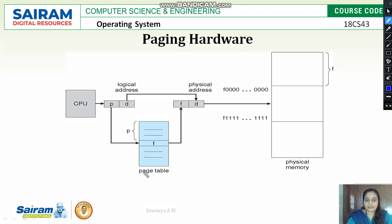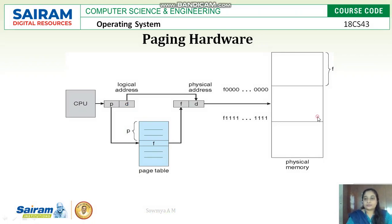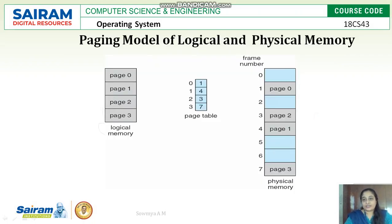The page table is also a part of main memory. It takes a logical address and transfers it into frames by adding the physical offset value. The CPU always provides a logical address consisting of a page number and an offset value. The page number contains the frame number of the physical address. The frame number is added with the offset value d — the d in both page number and frame number will be the same — to get the physical address stored in physical memory.